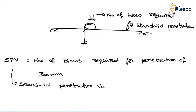Why 300 mm specifically? This is what is described from experimental procedures — they observed that up to 300 mm they achieve correct values. So the standard penetration value is the number of blows required for 300 mm penetration. Depending on these blows, we find out the bearing pressure.